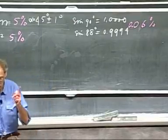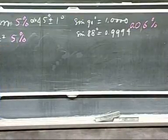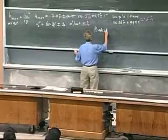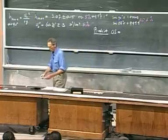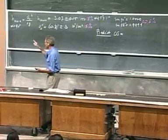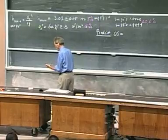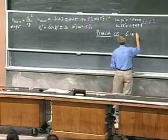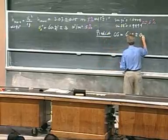So all we have to worry about is the uncertainty in V0 squared. And so now comes my big prediction. For 45 degrees, OS equals V0 squared times sine of 2 alpha divided by g. That is 60.2 times 1, divided by 9.8 — that is 6.14 meters. With an uncertainty of 5%, because that's the uncertainty in V0 squared, and so that is an uncertainty of 30 centimeters.